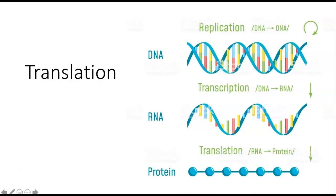Welcome back to our next lecture in this module. We're getting into the final step of the central dogma of molecular biology, and that is translation. We've talked about DNA replication, where DNA copies itself semi-conservatively, and then transcription, which is the production of an mRNA from reading of the DNA. Now we're going to talk about translation — how the cell takes this mRNA and makes a protein.